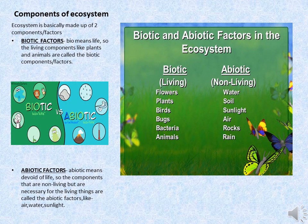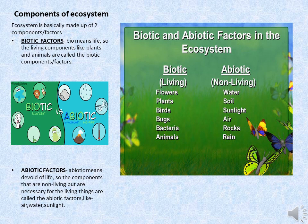Now let us learn about the components of the ecosystem. An ecosystem is mainly divided into two parts: the biotic and the abiotic. Talking about the biotic factors, as we know that bio means life, so all the living things present at a particular place — they may be plants, animals, bacteria, fungi — make up the biotic components of that ecosystem.